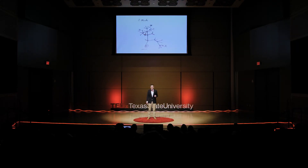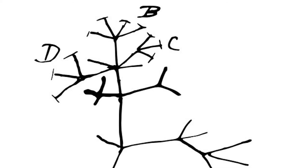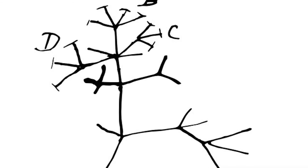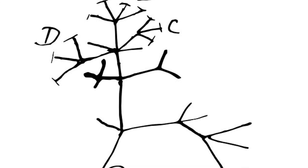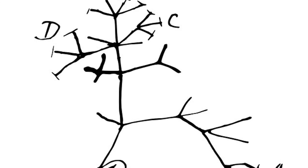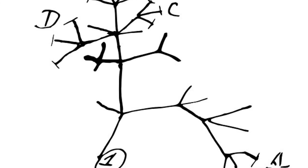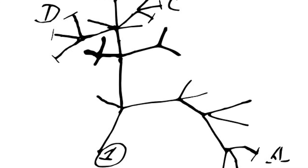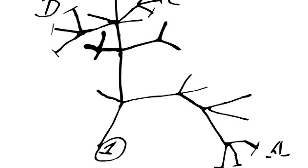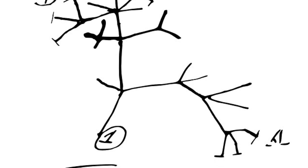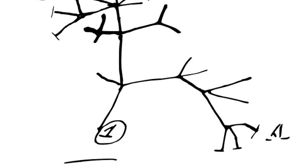Take this kind of diagram, for example. This was drawn by Charles Darwin during his famous Voyage of the Beagle. These tree diagrams come in many different shapes, sizes, colors, and orientations, and they look wildly different, which makes it so difficult for students to understand these kind of diagrams.